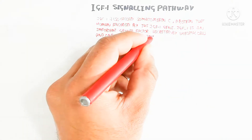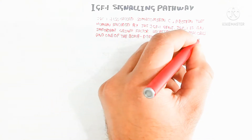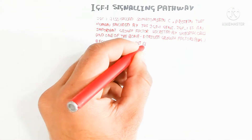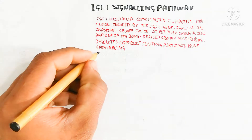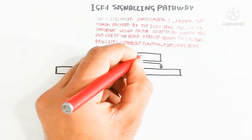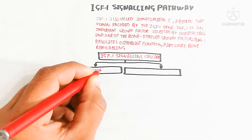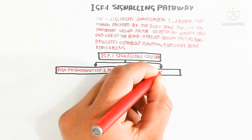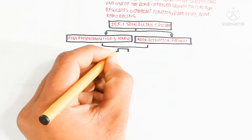IGF-1 is an important growth factor secreted by skeletal cells and is one of the bone-derived growth factors. It regulates osteoblast function and participates in bone remodeling, making it very important for bone formation. The IGF-1 signaling cascade can activate the PI3K (phosphoinositide 3-kinase) and MAP kinase pathways.